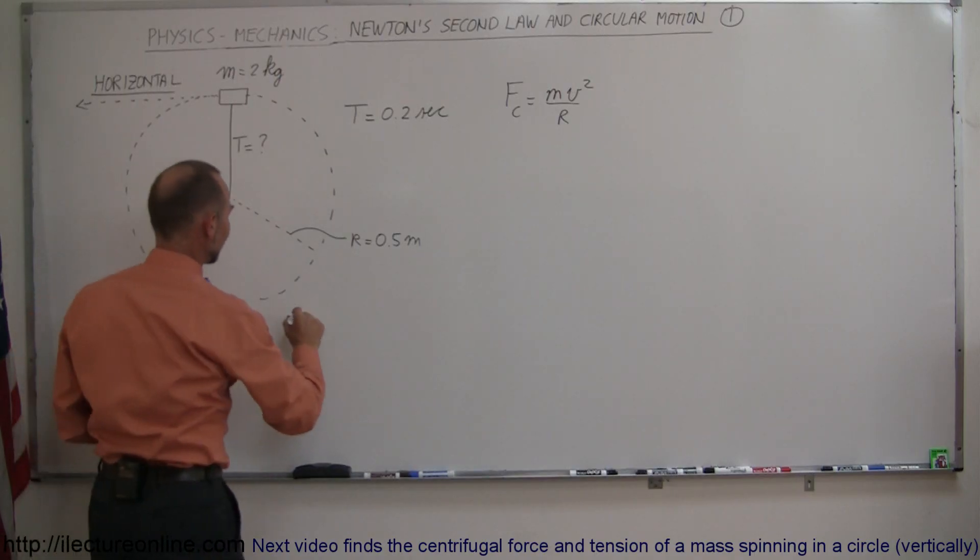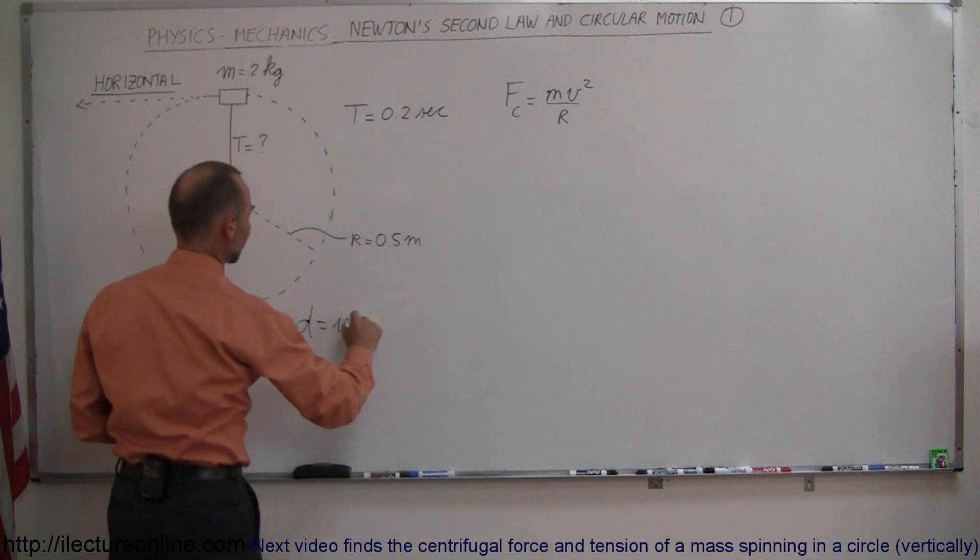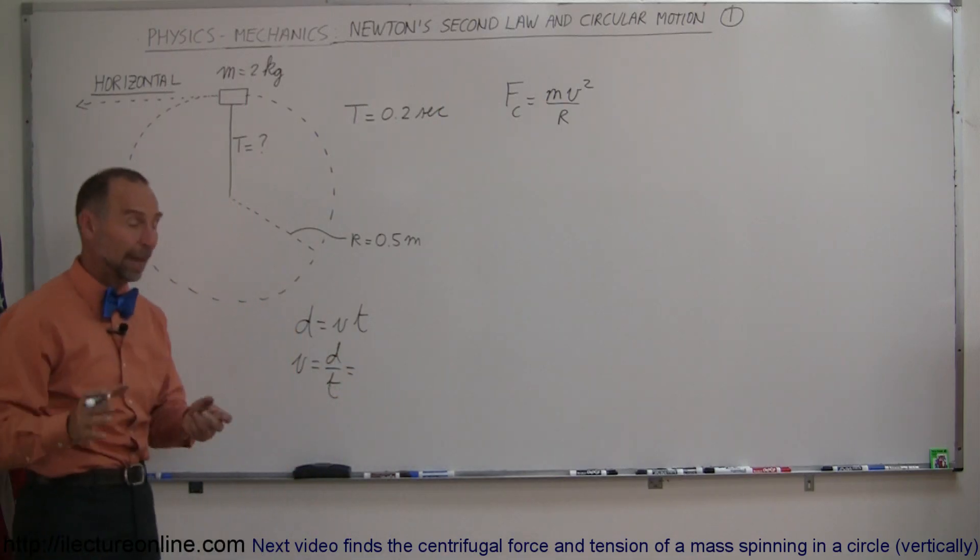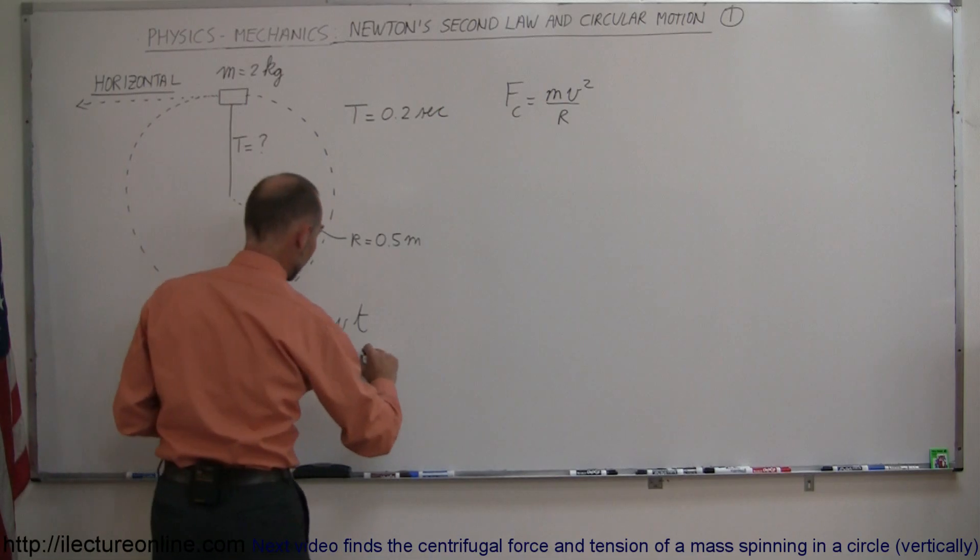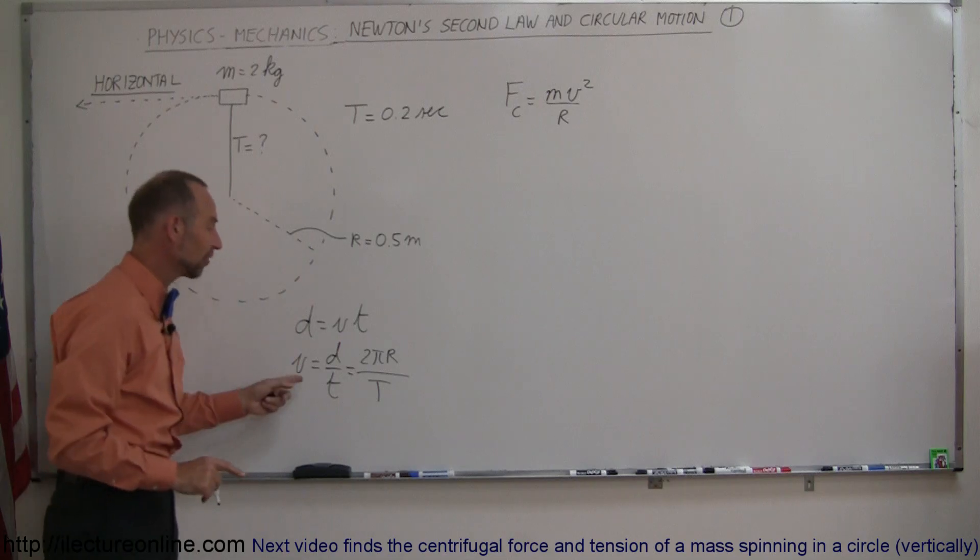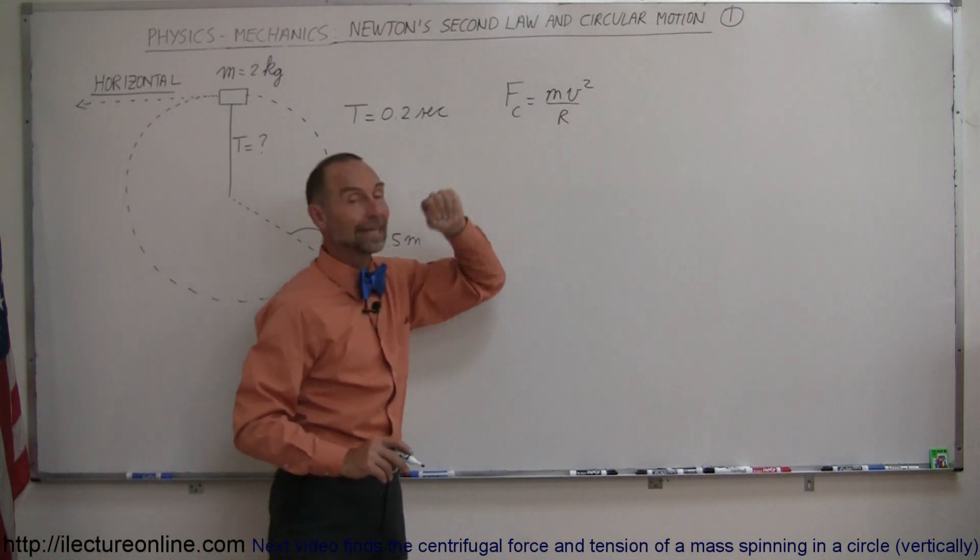So for that, we can say that distance is equal to velocity times time, or velocity is equal to distance divided by time. In the case of a circular path, the distance would be the circumference, 2 pi times the radius, divided by the time, which is the period. So that's how we find the velocity, which we'll then plug in here.